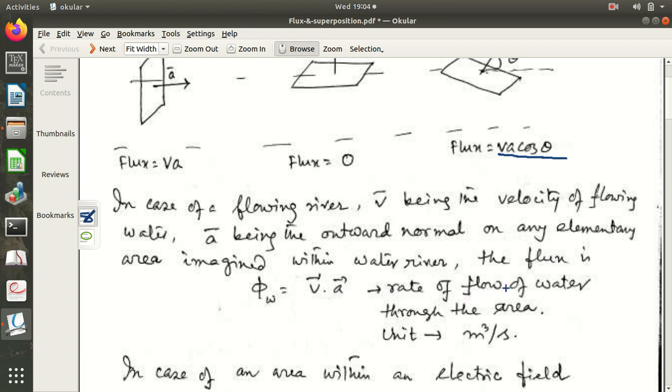That means rate of flow of water through the area. Amount of water flowing through the area per unit time. The volume of water, that means the unit has to be meter cube. It also comes from here. It is meter per second and it is meter square. The area denotes the meter square.